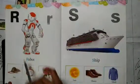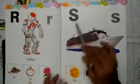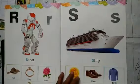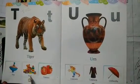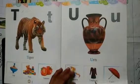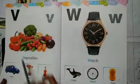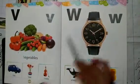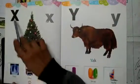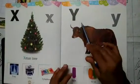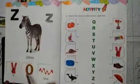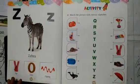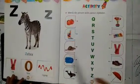This is R — R for ring. This is S — S for shoes. This is T — T for toys. This is U — U for uniform. This is V — V for vase. This is W — W for wheel. This is X — X for xerox. This is Y — Y for yo-yo. This is Z — Z for zero.